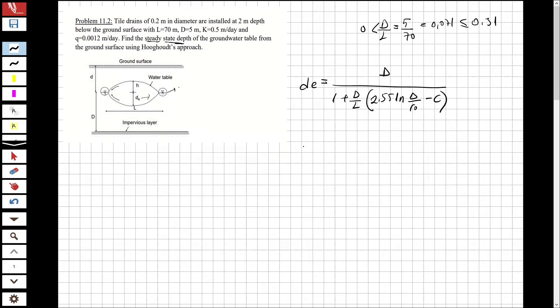Now first I'm going to obtain the c value. The formulation of c value is equal to 3.55 minus 1.6 multiplied by d over l plus 2 multiplied by d over l square. So let's first determine c.